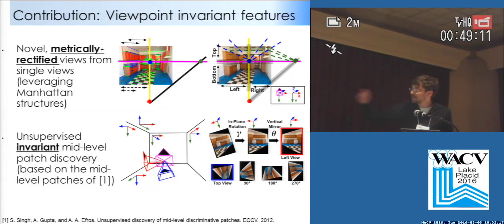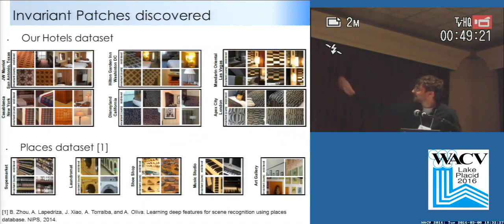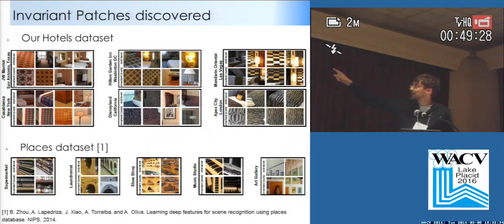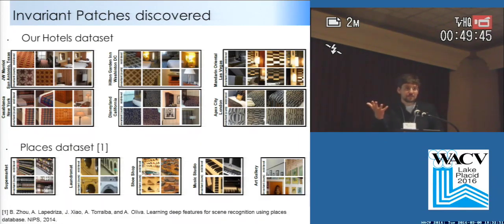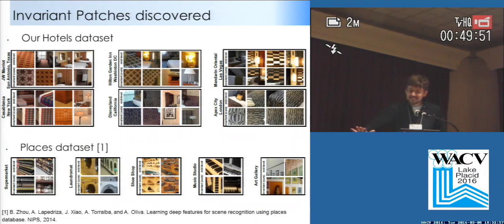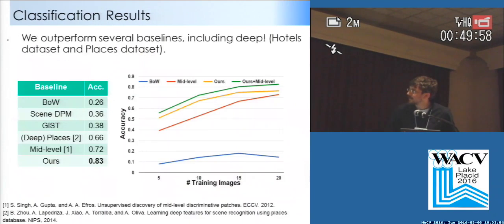We use unsupervised mid-level patch discovery features from single view, but our main contribution is in this first part of rectification. These are examples of the features we extract. In each example, the first row shows features extracted from standard methods and the second row shows our features. Our features tend to be extracted from stylistic details in the room rather than 3D patterns, which is beneficial because 3D patterns change with viewpoint, whereas stylistic patterns — when you obtain a normalized view of them — don't change across views.